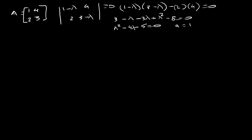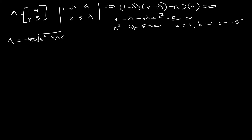So a is equal to 1, b is equal to minus 4, and c is equal to minus 5. To find our lambda, we use minus b plus or minus square root of b squared minus 4ac divided by 2a. So minus b is 4, plus or minus b squared that's 16, and 4ac: it's 1 times 5, that's 5, but because there's a minus there, this is plus 20. And a is 1, so this is divided by 2.